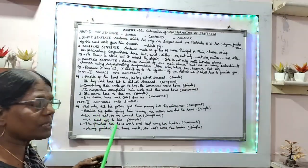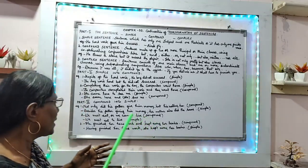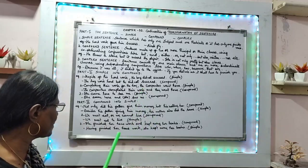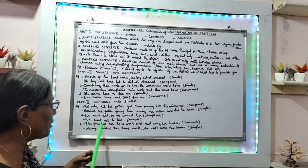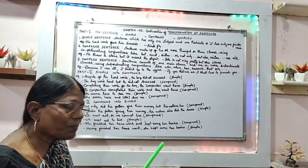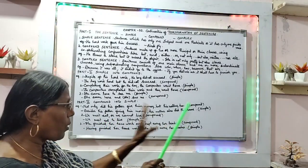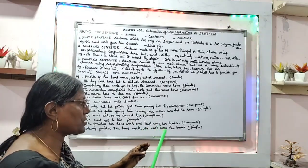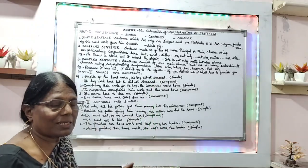Next example: 'We must eat or we cannot live' — that is a compound sentence. Changed to simple: 'We must eat to live.' Lastly, another example: 'She finished her homework and kept away her books' — that is a compound sentence. Changed to simple: 'Having finished her homework, she kept away her books.' That is a simple sentence.